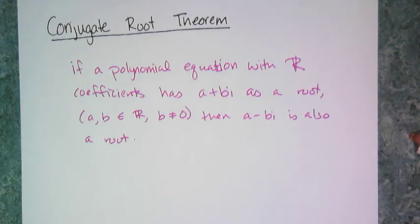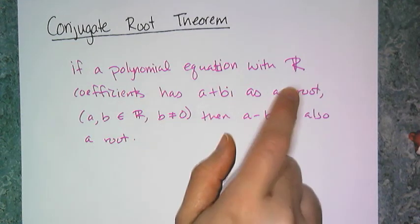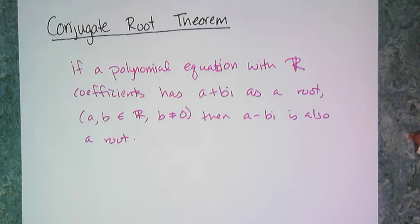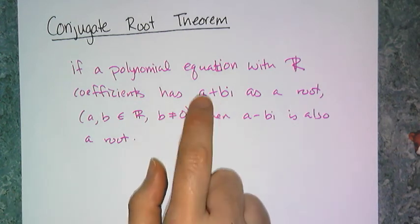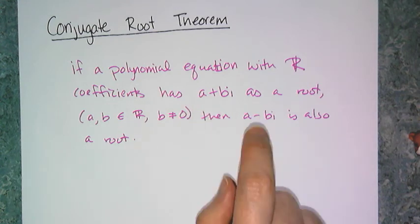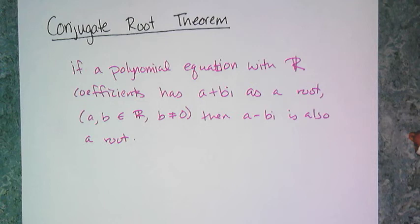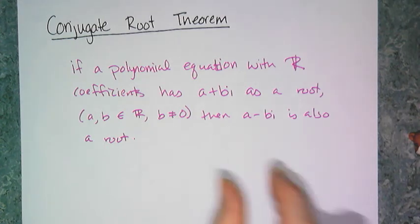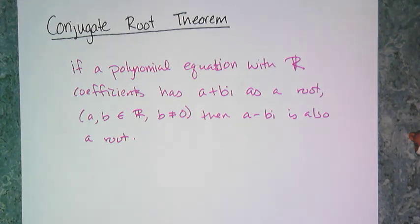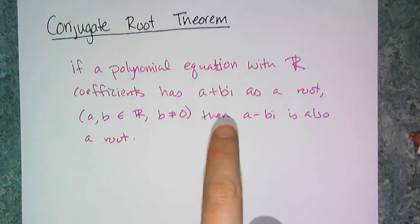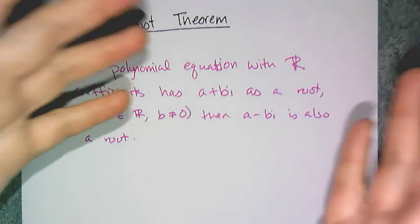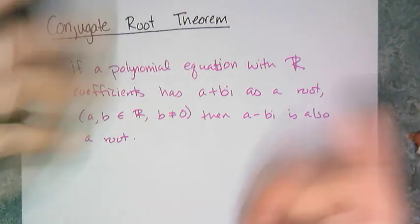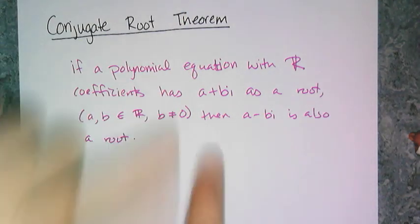Now let's look at the conjugate root theorem. It says: if a polynomial equation with real coefficients has a plus bi as a root, where b is not equal to 0, then a minus bi also has to be a root. That makes sense because a number times its conjugate gives you something real. The way factors and roots work, you multiply them together, so if you have an imaginary root but real coefficients, those imaginary parts had to cancel out.